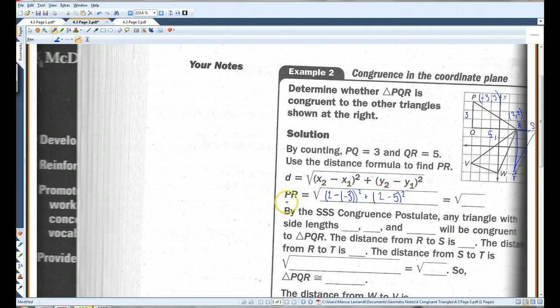And they don't really give much room, so I'm going to do this over here. The minus negative becomes a positive. 2 plus 3 is 5. 2 minus 5 is negative 3, so I have negative 3 squared.